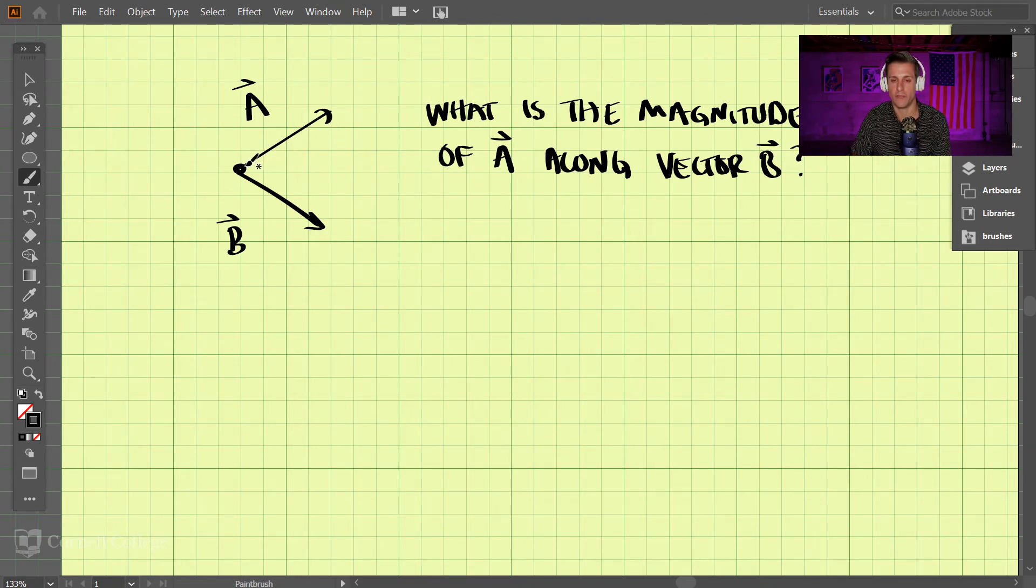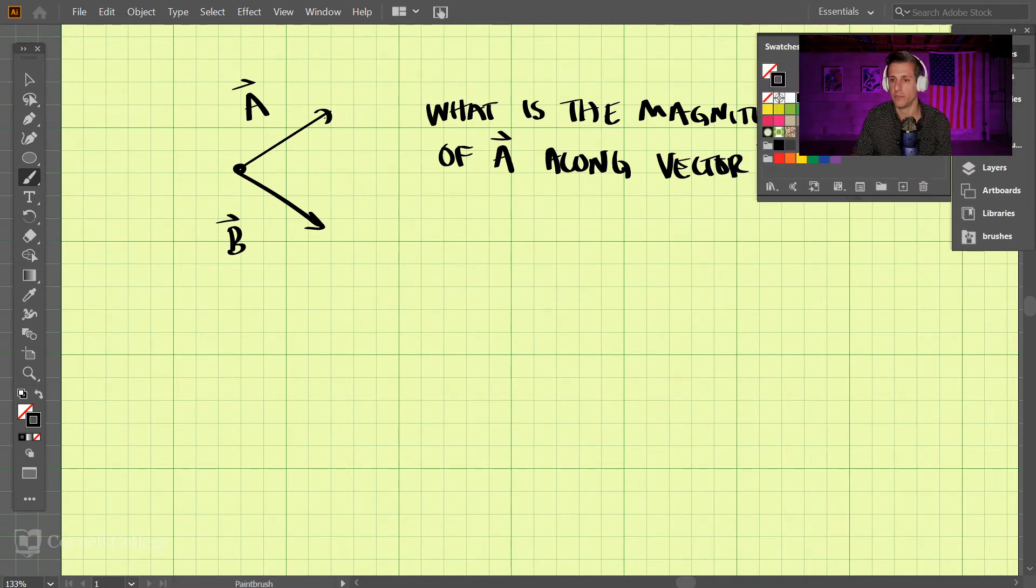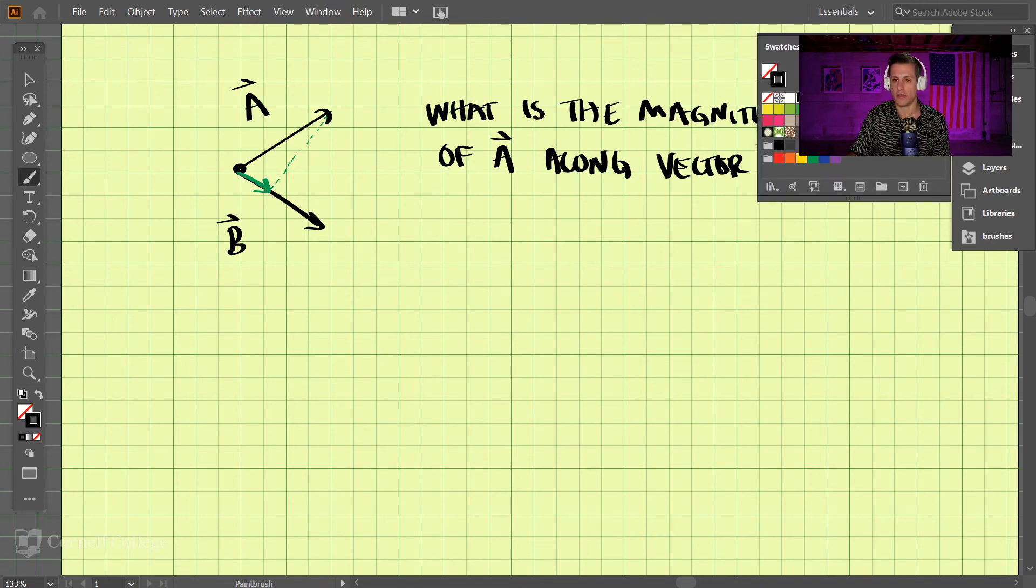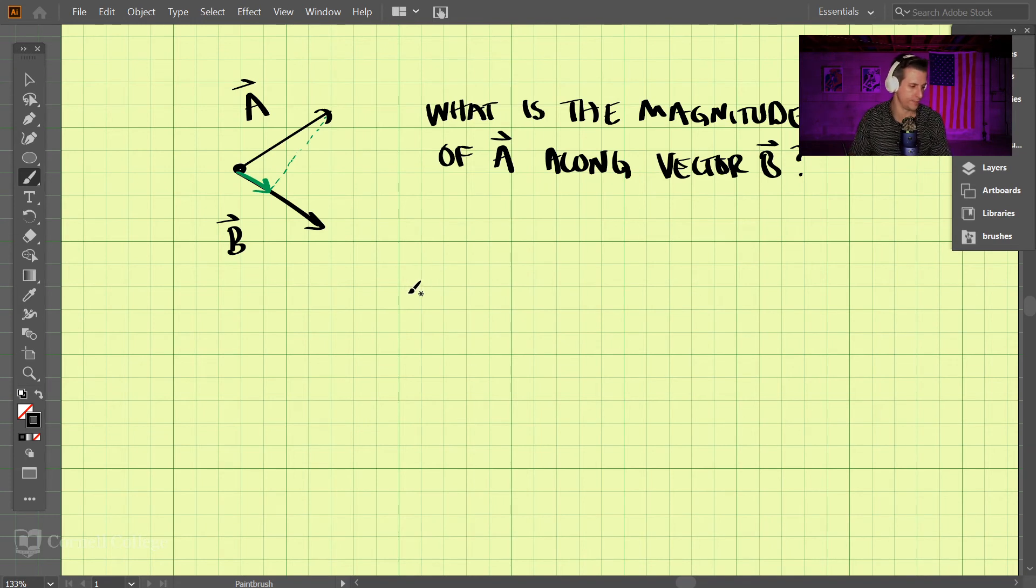For example, we would project this down onto vector B. What is that magnitude if we projected this onto vector B? We can see that graphically, but how do we solve it analytically? There are two steps.